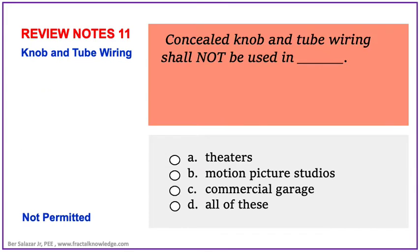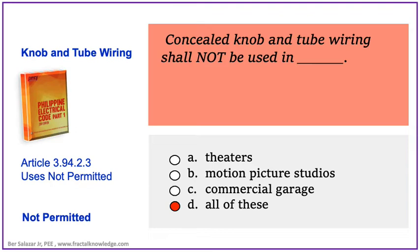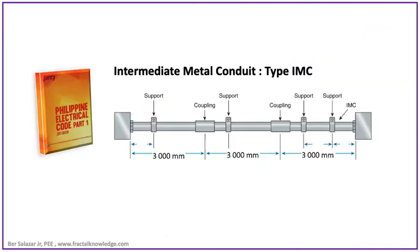Another possible problem asks about not-permitted usage. Concealed knob and tube wiring shall not be used in theaters, motion picture studios, commercial garages, or all of these. The correct answer can be found in PEC 2017, section 3.94.2.3 Uses Not Permitted, page 273. The answer is letter D: all of the mentioned places. Knob and tube wiring shall not be used there. Those are all the questions for concealed knob and tube wiring.